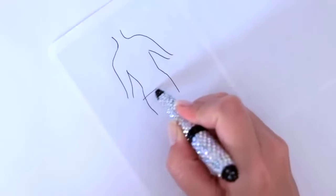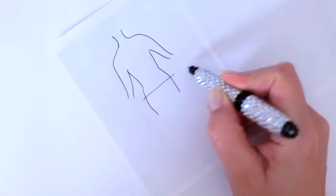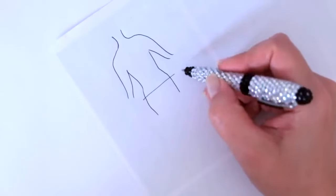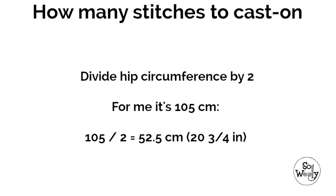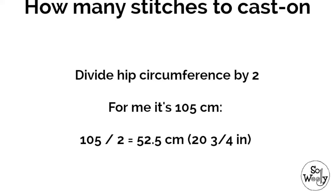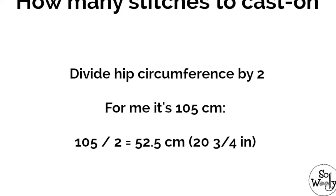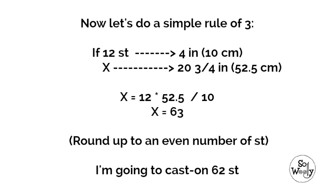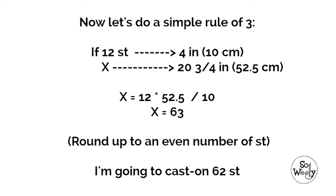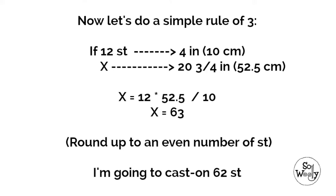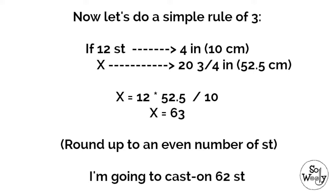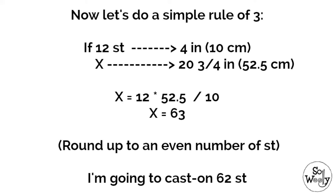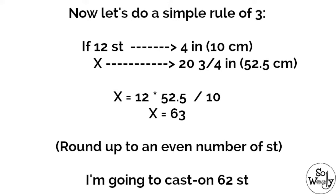The front and the back of the sweater are the same thing and the first thing we're going to do is to measure the hip circumference. Take it exactly where you want the sweater to end, at the bottom edge. In my case it's 105 centimeters. Divide this by 2, so for me it's 52.5 centimeters. Now let's do a simple rule of three. If 12 stitches are 10 centimeters or 4 inches, 52.5 centimeters — how many stitches are that?